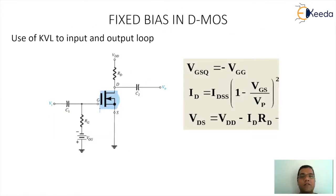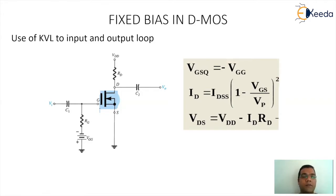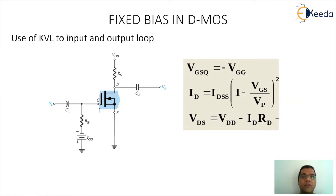The first thing we are discussing here is a fixed bias D-MOSFET circuitry. If you can see the figure carefully, you can see the D-MOSFET biased to a negative voltage by the battery VGG, input resistance for the gate terminal RG, resistance RD for the drain terminal, the VDD battery, and the two coupling capacitors C1 and C2 with input VI and output VO. This is an amplifier circuitry using the fixed bias arrangement of the D-MOSFET.